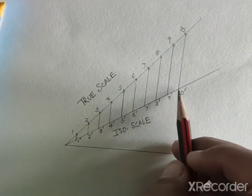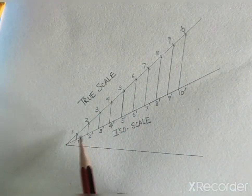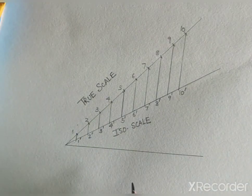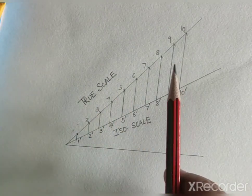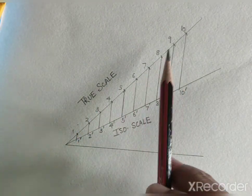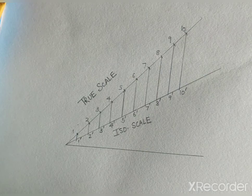So we will take the markings on the iso scale for drawing the isometric projections. And whenever we want to draw the isometric view or isometric drawing, then we will take the measures of true scale only. Thank you very much.